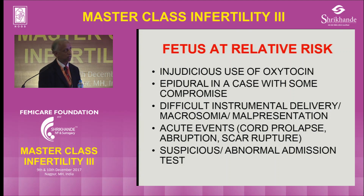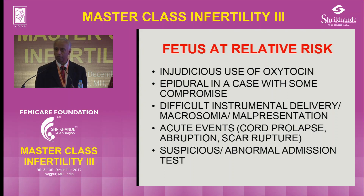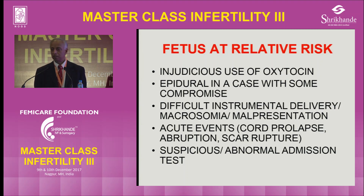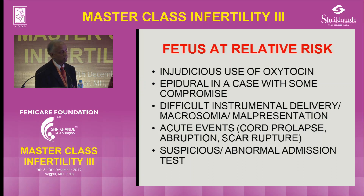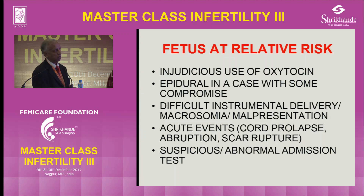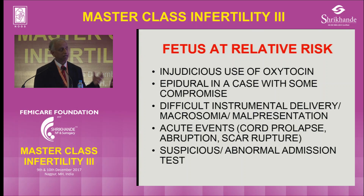Intervening too early in breech delivery causes trouble. The fourth category is acute events: cord prolapse, abruption, and scar rupture must be diagnosed clinically. When a woman with a previous scar suddenly has a heart rate drop, the first diagnosis is scar rupture — you don't need an ultrasound. If the head was three-fifths palpable and is now five-fifths, the scar has given way. Urgency is critical; these typically present with acute bradycardia or a suspicious abnormal admission test.